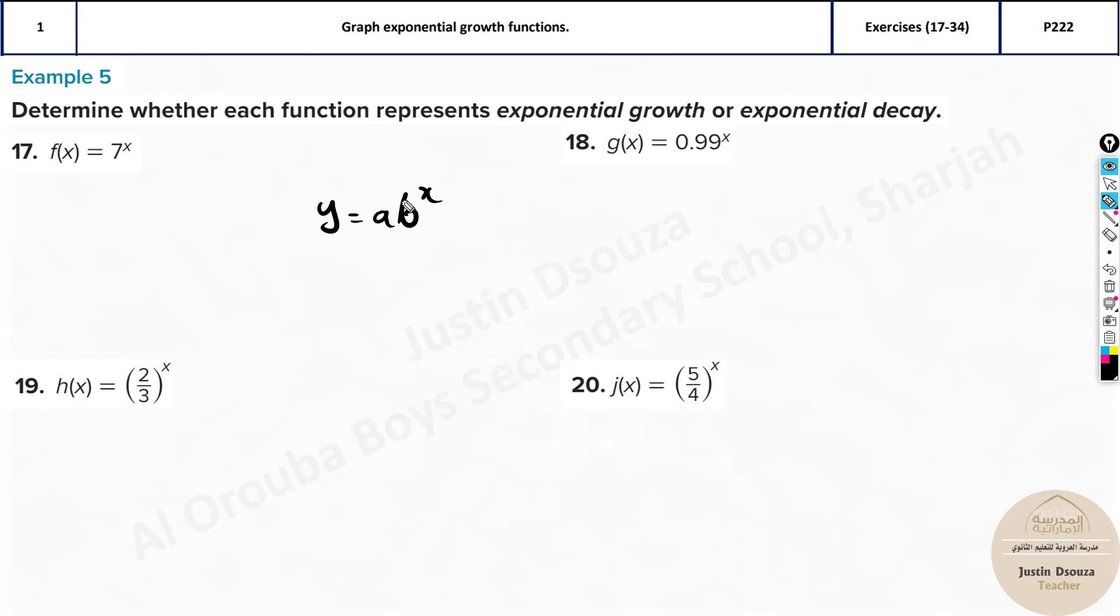Now here, what you have to basically do is simple. Focus on this part. What is the b value? If it is greater than 1, doesn't matter what, it will keep on increasing. That's a growth. Whereas, if this value is less than 1, then it decreases. It will always decrease.